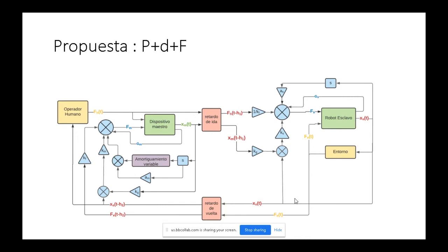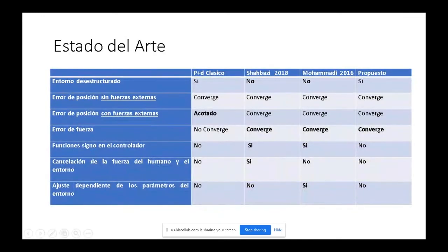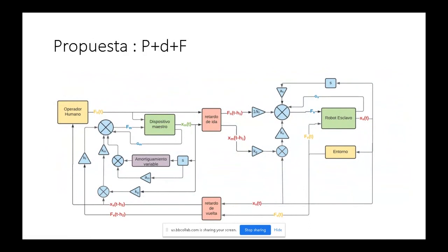Nuestra propuesta es simple desde el punto de vista matemático, pero no así desde el análisis del sistema. Se plantea la utilización de un controlador proporcional para lograr el sincronismo de posición, y una derivativa de amortiguamiento para compensar los efectos del retardo de tiempo, lo cual extrae energía del sistema para asegurar que el sistema no oscile. Las señales de control que viajan de un lugar al otro se distorsionan, lo que en presencia de realimentación puede producir oscilaciones, como cuando se intenta hablar por teléfono con mucho retardo.